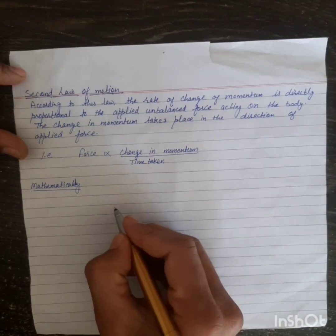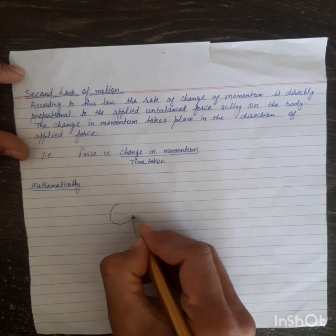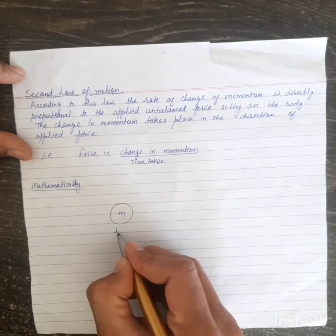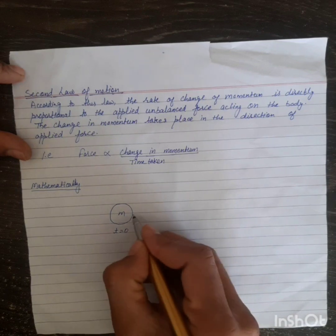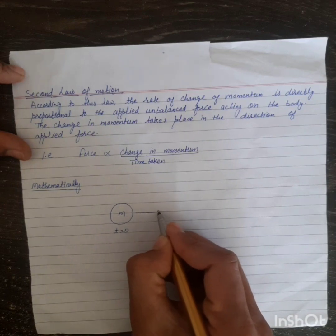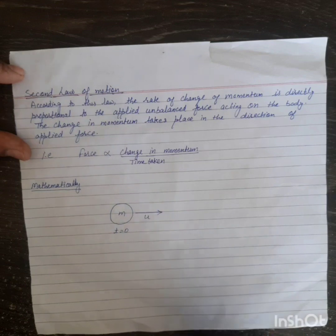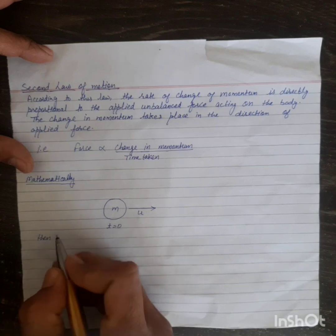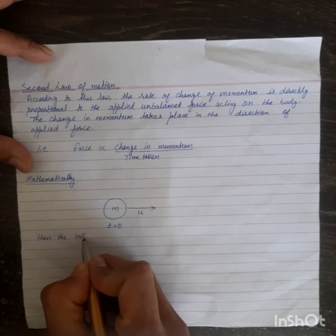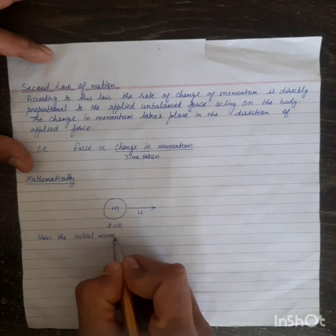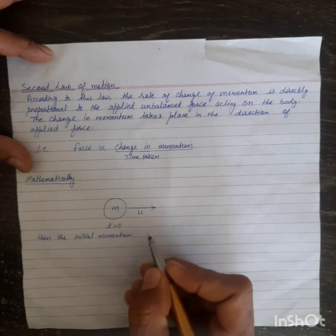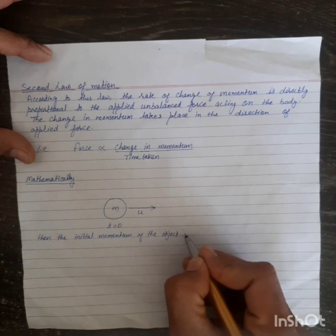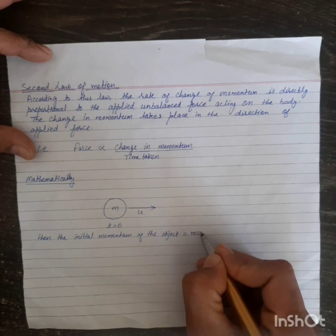Mathematically, if we have an object of mass M, initially at time t equals 0 seconds, this object is moving with velocity u. Then the initial momentum of the object is equal to mu.